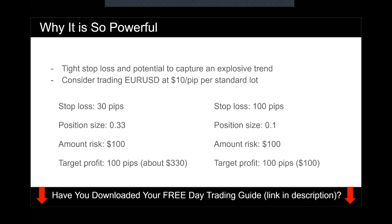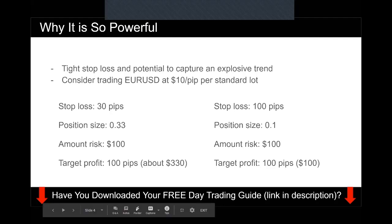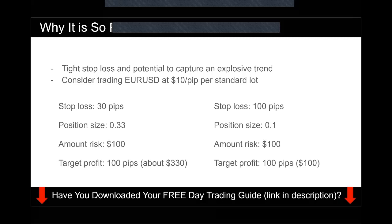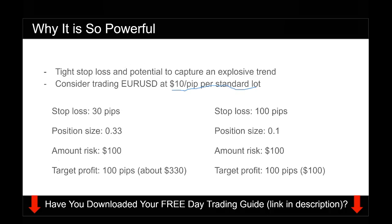Let me explain why this strategy is so powerful. In this channel, we like to explain why certain things work. The inside bar trading strategy has a very tight stop loss and the potential to capture an explosive trend — meaning a very small stop loss with the potential to catch a very big movement. Let me walk you through a numerical example using Euro/USD, where one standard lot is about $10 per pip.